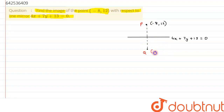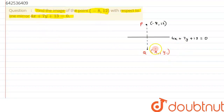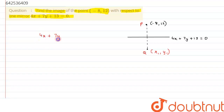Let's suppose the coordinate of Q to be S, that is X1, Y1. Alright, so from here we can see we are interested in finding only this coordinate X1 and Y1. The line of the mirror is being given as 4X plus 7Y plus 13.